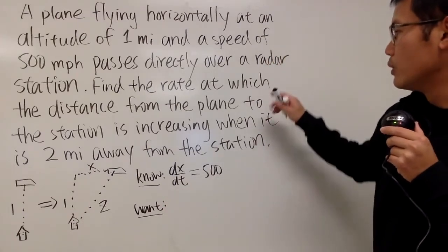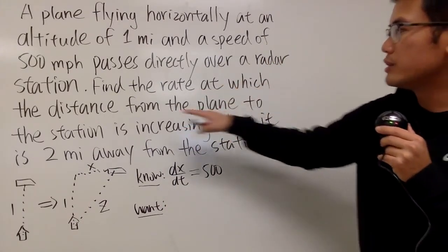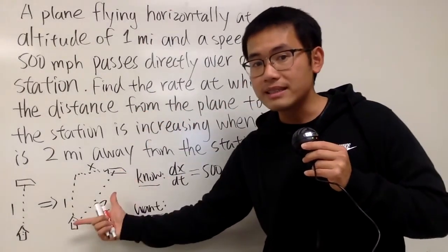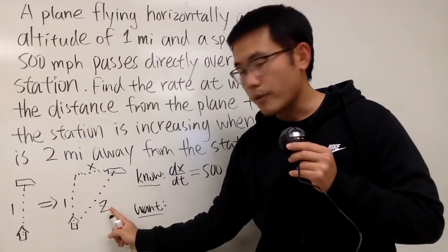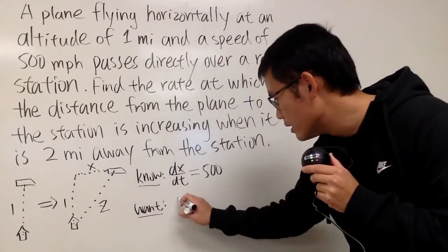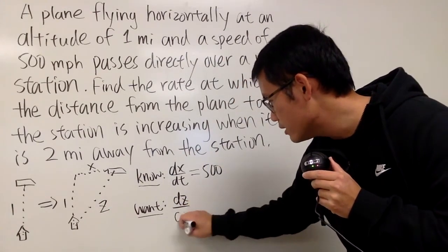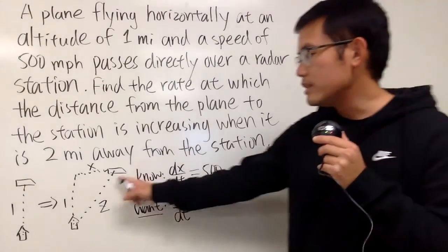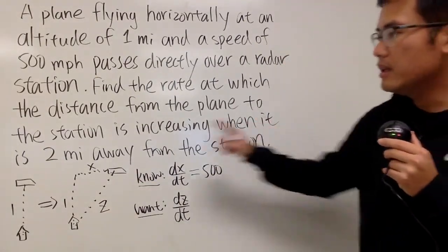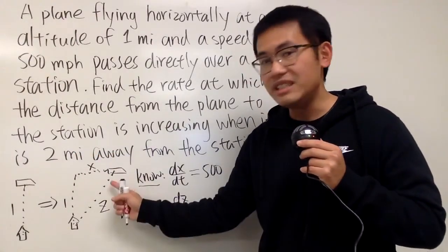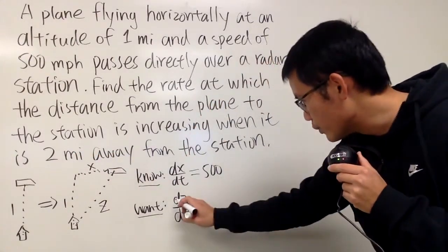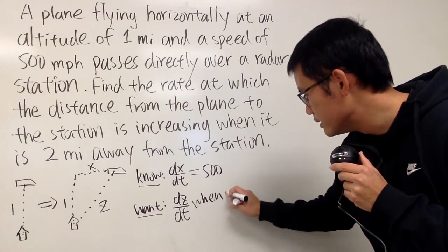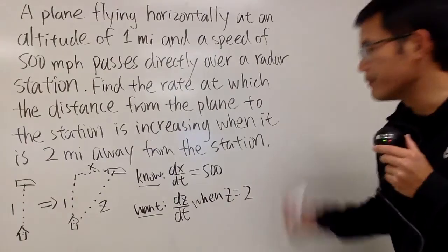Let's see what do we want to know. We want to know the rate at which the distance from the plane to the station is changing. So we want to know how fast this is changing, that would be dz/dt. And remember, whenever you see the word rate, it's the derivative. More specifically, we want dz/dt when it is 2 miles away, so that means when z is equal to 2. We want this when z equals 2.